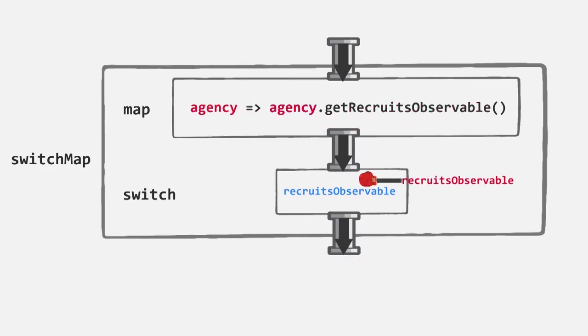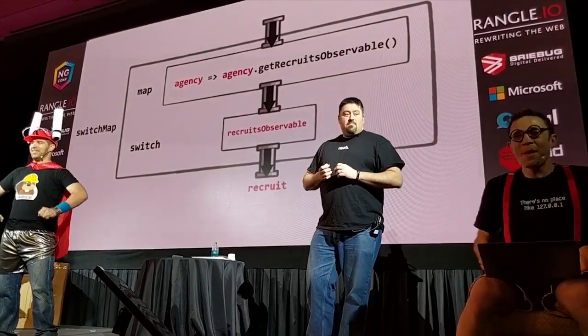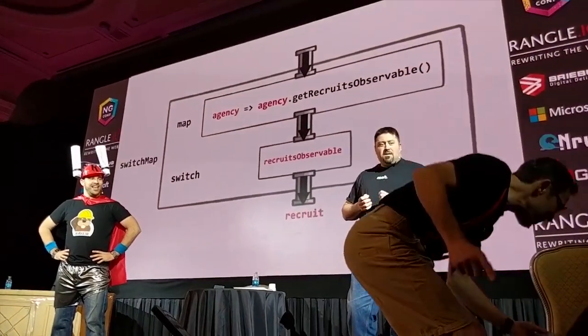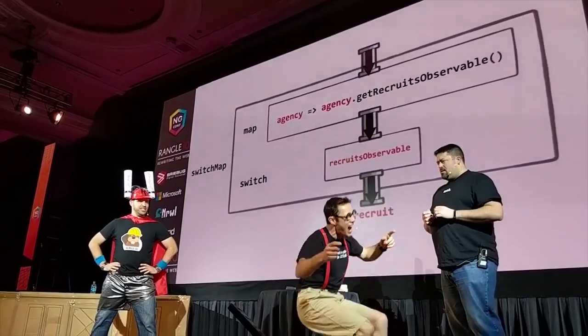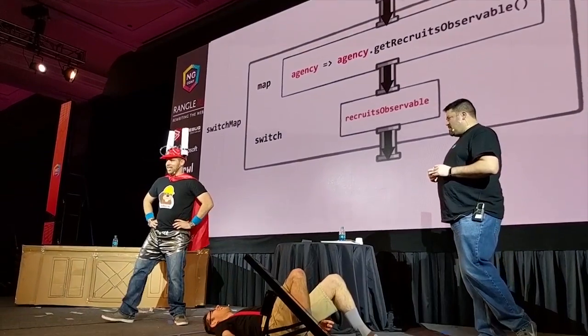Unsubscribing from the previous recruits observable before subscribing to the new one. And this is... switchMap! All of this actually makes sense. Did I just learn switchMap? I believe you have. Thanks, Reactive Teacher Man. Now I understand how my autocomplete component actually works.